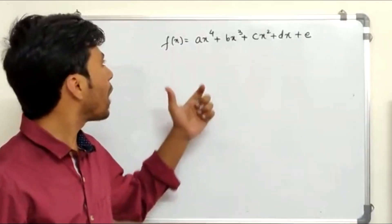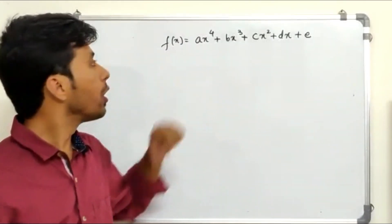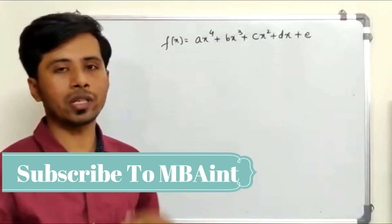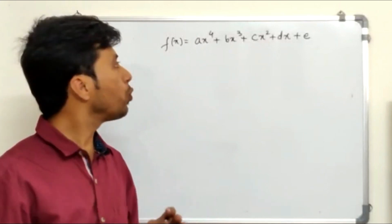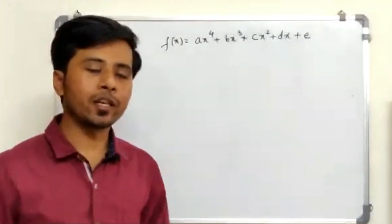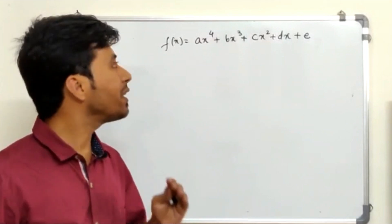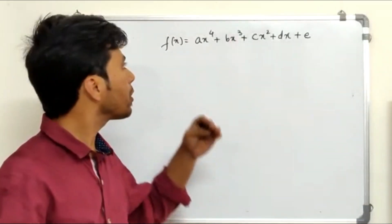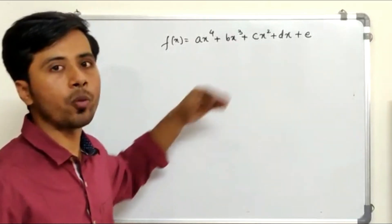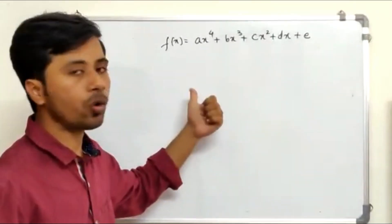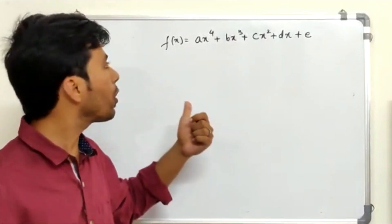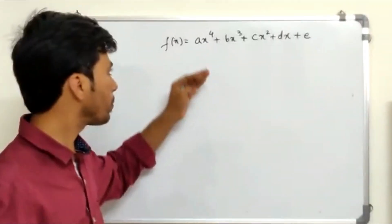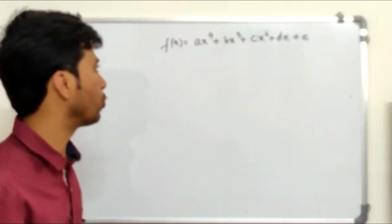You can see that I have written a polynomial on the board. Before we find out the number of positive real roots and negative real roots, we need to know something about imaginary roots as well. One thing to always remember: imaginary roots will always be in an even number. The imaginary roots can be 0, 2, or 4 — they cannot be 1, 3, or any odd number.